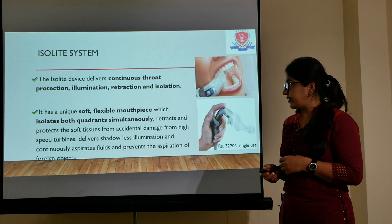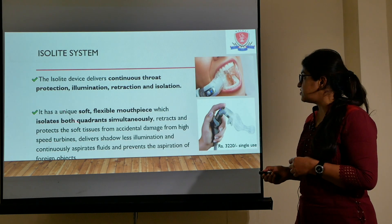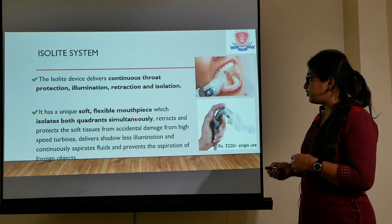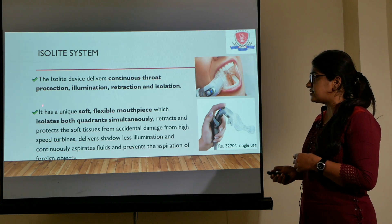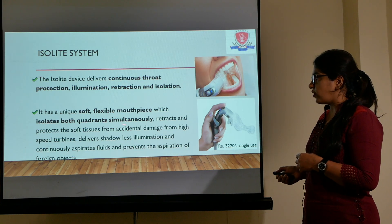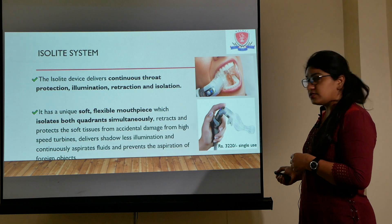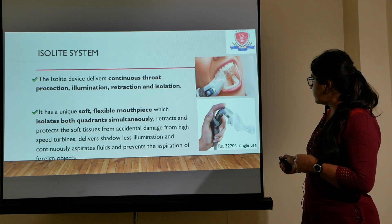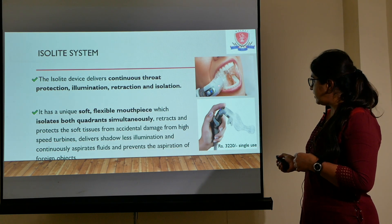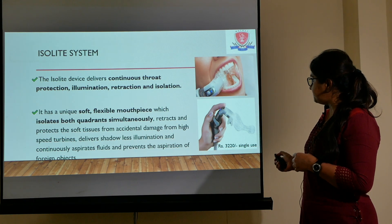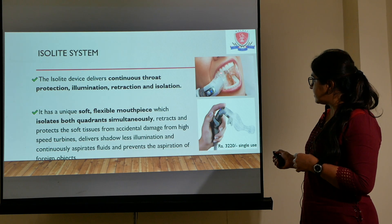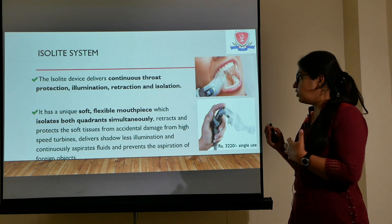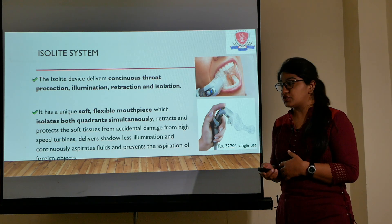The Isolite system is a very recent system. It provides continuous throat protection, illumination, retraction, and isolation, and it isolates both quadrants simultaneously. You can see it isolating both quadrants — it has a light system for good illumination, it retracts the tongue and the cheek simultaneously, almost serving all the purposes and all the goals of isolation.